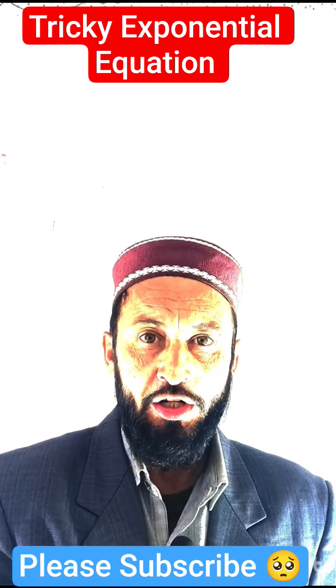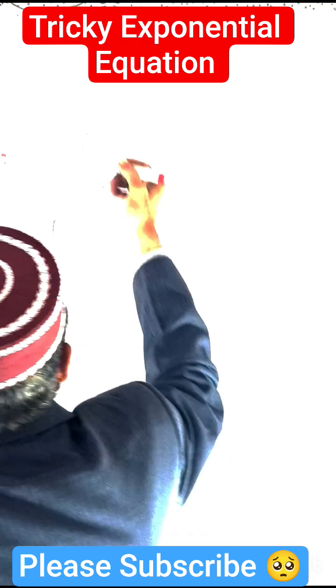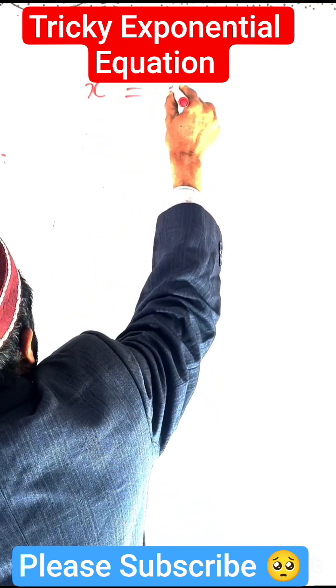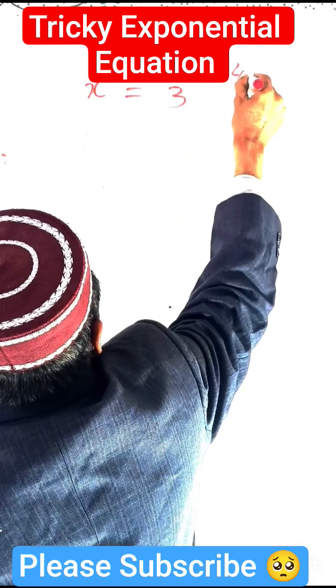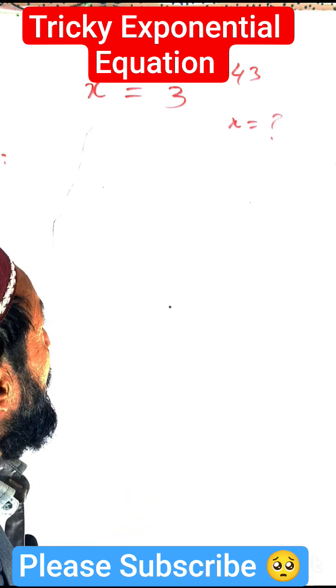Today we have a new exponential equation tricky question. How can we calculate the value of x? x exponent of x is equal to 3 exponent of x plus 243. x is unknown.